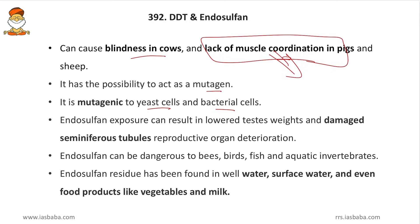Endosulfan can be dangerous to bees, birds, fish, and aquatic invertebrates — not only larger animals but even smaller ones. Endosulfan residue has been found in well water, surface water, and even food products like vegetables and milk. So it accumulates not only in animals but also in the environment, water, and food.